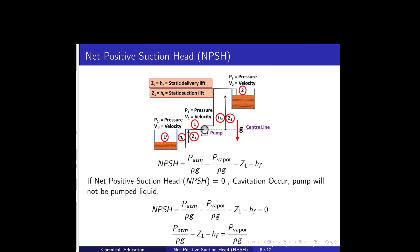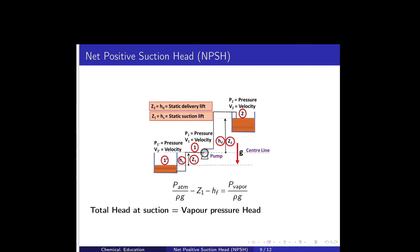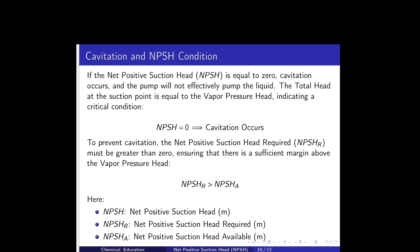If NPSH equals zero, cavitation occurs and the pump will not pump the liquid. When NPSH = 0, that means Patm/ρg − Z1 − HF = Pvapor/ρg — the total head at the suction point equals the vapor pressure head, indicating the critical condition. So NPSH = 0 means cavitation occurs and the pump will not effectively pump the liquid.